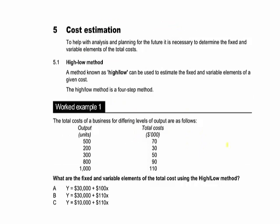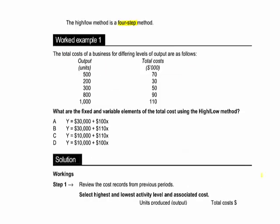Once we've analysed costs into their fixed and variable elements, we can estimate what our total costs are going to be. The method we use is called the high-low method, which estimates what amount of cost is fixed and what amount is variable through a four-step process. In worked example one, we're given total costs at five different levels of output and need to find the total cost equation y = a + bx. Step one is to review cost records from the previous period and identify the highest and lowest levels of output and their associated costs. When 200,000 units were produced the costs were $110,000.